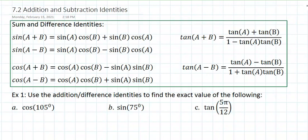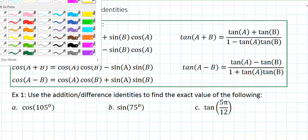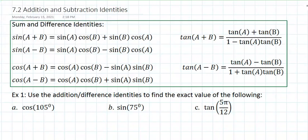Section 7.2 talks about addition and subtraction identities. It turns out we have six identities, two of which I will provide if there is a question on the exam. So if I ask for the tangent of A plus B or the tangent of A minus B, I will provide those identities.